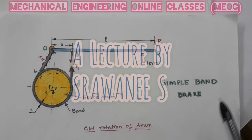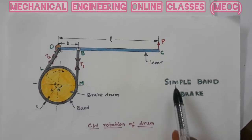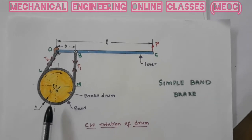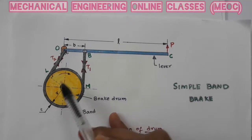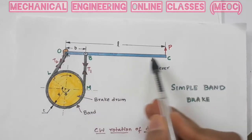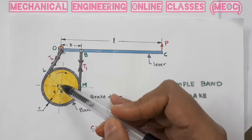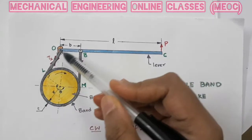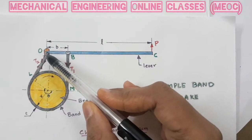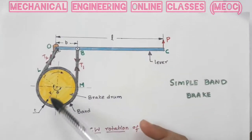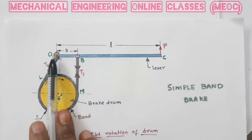Today let us see a new type of brake — the band brake — specifically the simple band brake. One can see the figure here. The yellow coloured one is the wheel or brake drum, the blue one is a lever. To this lever and the brake drum there is a band attached. One end of the band is attached to a fixed pin or the fulcrum of the lever, and the other end is attached to the lever at some distance B from the fulcrum.